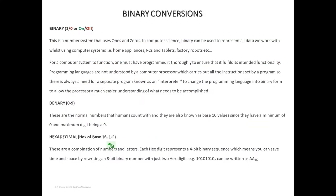Ones and zeros are the values for binary numbers. Binary is a language that computers understand. When you key in something on your keyboard or make a command — verbal or whichever input you give — the computer processes it by first translating whatever commands you're giving it into binary form, and that way it can understand exactly what you want it to do. Binary can also be used to represent numbers.